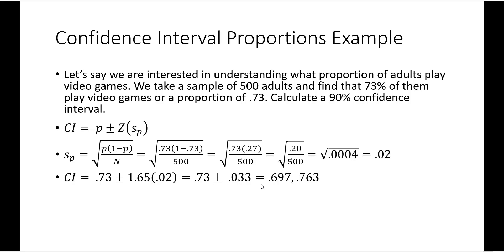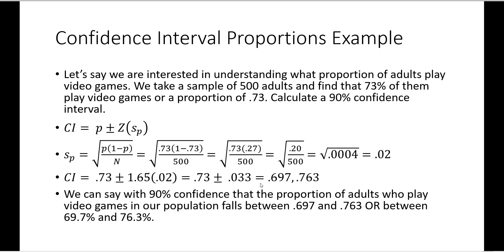This allows us to say with 90% confidence that the proportion of adults who play video games in our population falls between 0.697 and 0.763. Or using percentages, with 90% confidence, the percentage of adults who play video games is between 69.7% and 76.3%.